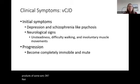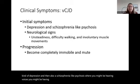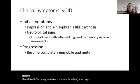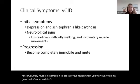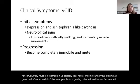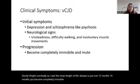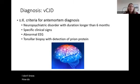The initial symptoms in humans are depression and a schizophrenia-like psychosis — hearing voices, hallucinations. All initial symptoms are neurological. Beyond mental health symptoms, you'll have trouble walking, fall over easily, and experience involuntary muscle movements. Basically your nervous system goes haywire because your brain is developing holes and can't function as it should. Eventually, over a mean illness duration of about 12–14 months, you become completely immobile and mute.